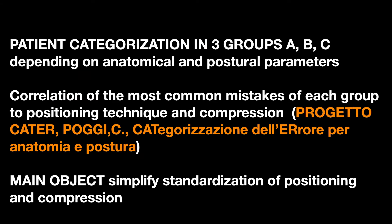I call the groups A, B, C simply, and for each of them a different specific range of compression is provided, as we will see in the next lesson, as well as a specific positioning approach, on the basis of the most common mistakes for each group, highlighted by the research project still underway, called CUTTER. One of the main objectives is to simplify standardization of compression, which is a very desirable process, but still far from being achieved.